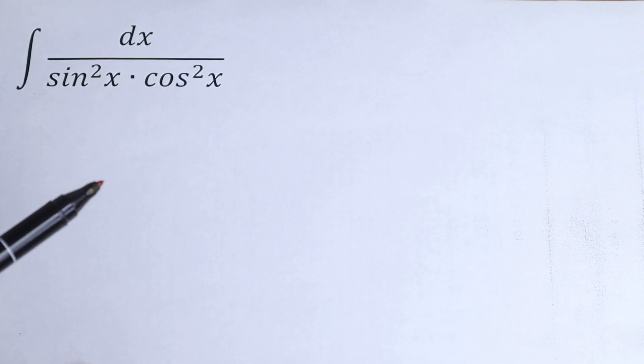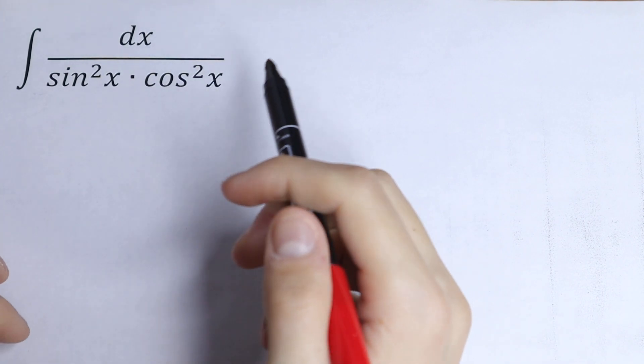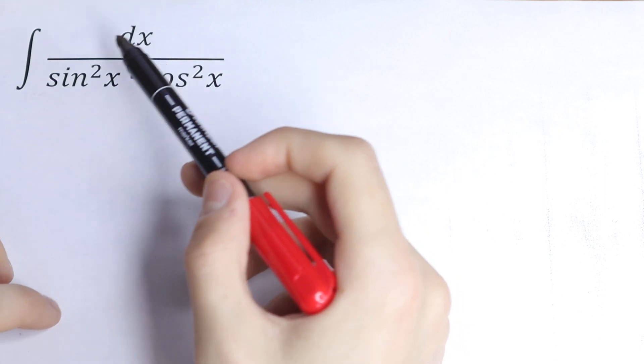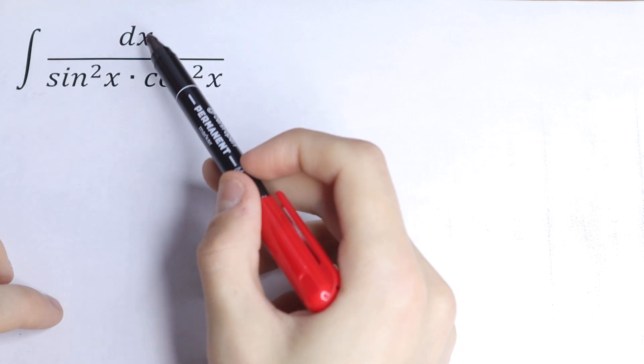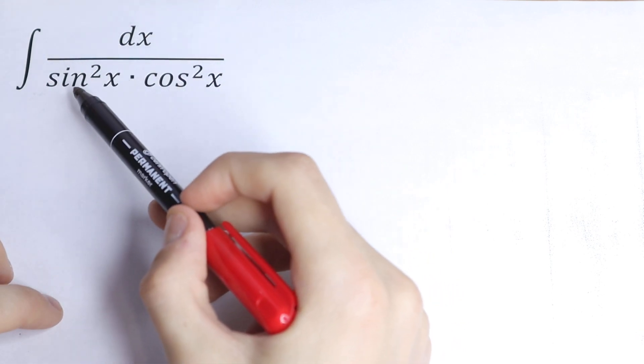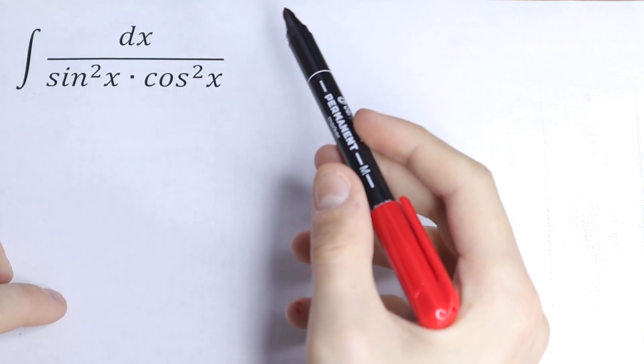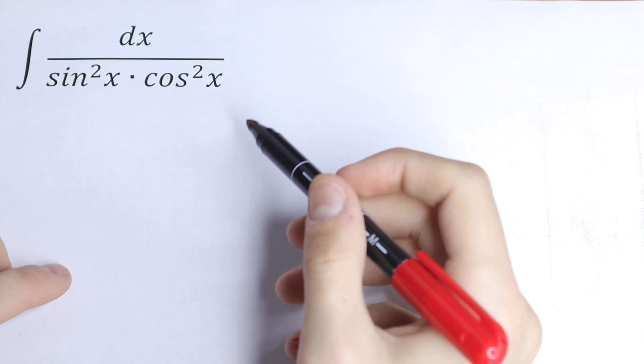Hello everyone, welcome back to Higher Mathematics. Here we have an interesting undefined integral: what is the integral of dx all over sine squared x times cosine squared x?